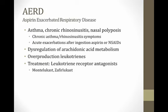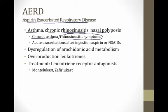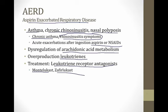Aspirin-exacerbated respiratory disease is a rare subtype of asthma where symptoms are triggered by taking aspirin or NSAIDs. These patients usually have a chronic triad of asthma, chronic sinusitis, and nasal polyps, presenting with recurrent chronic asthma and rhinosinusitis. The reason this happens is a dysregulation of arachidonic acid metabolism — these patients overproduce leukotrienes, which leads to the asthma. Because they overproduce leukotrienes, the treatment of choice is a leukotriene receptor antagonist. Drugs like montelukast and zafirlukast work very well for patients with aspirin-sensitive asthma.